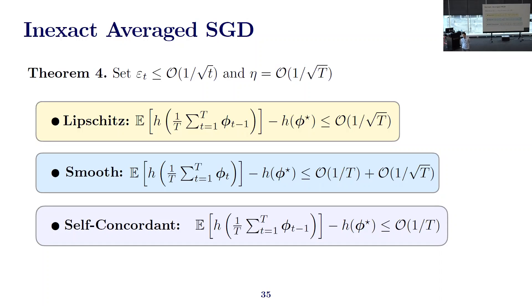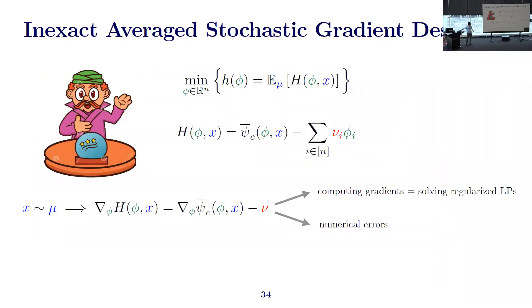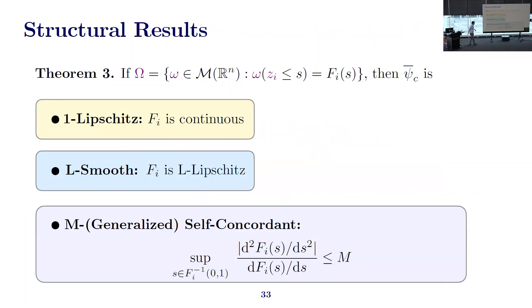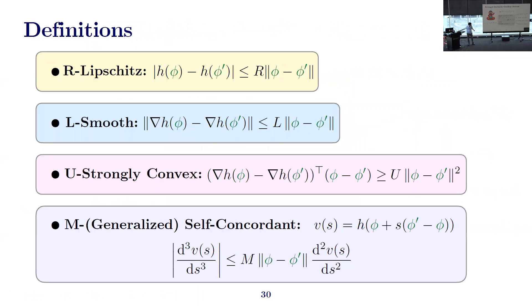Q&A on second-order methods: the algorithms presented are first-order SGD. Second-order methods are likely possible because the objective has a generalized self-concordance property — not the exact property used in classical interior point methods, but papers show that Newton methods converge in the non-stochastic case under this notion. In the stochastic case, such a result is not known to the speaker. Thanks to everyone for the great questions.